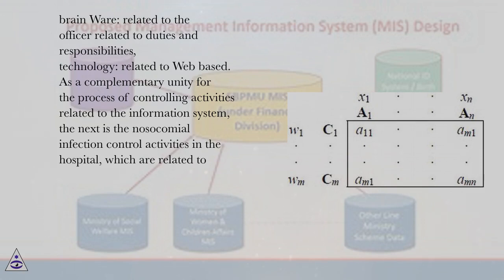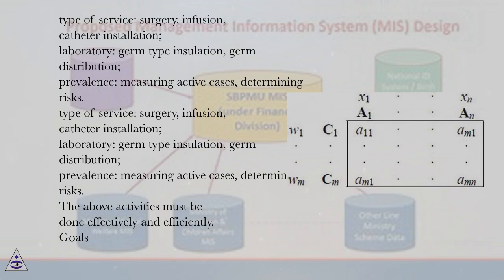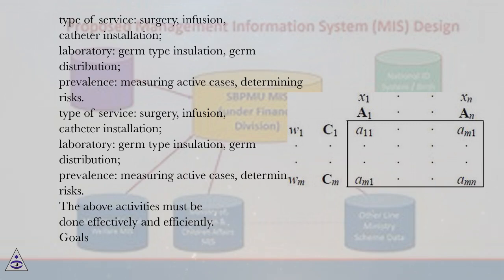The next component covers nosocomial infection control activities in the hospital, which are related to type of service: surgery, infusion, and catheter installation. Laboratory activities include germ type isolation and germ distribution. Prevalence involves measuring active cases and determining risks.